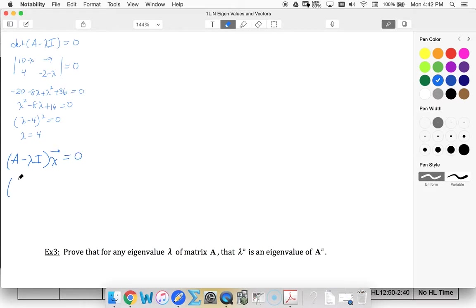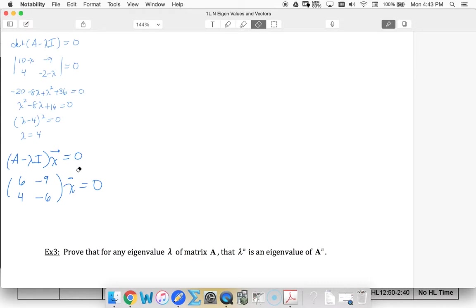So 6, negative 9, 4, negative 6, times X is 0. And let me put in my X, Y actually.